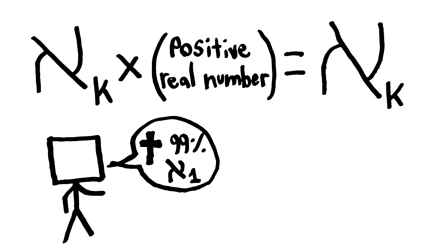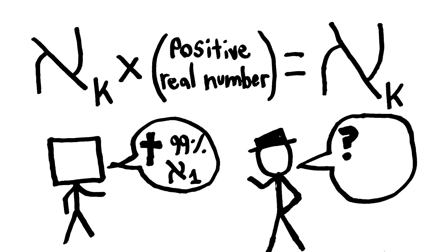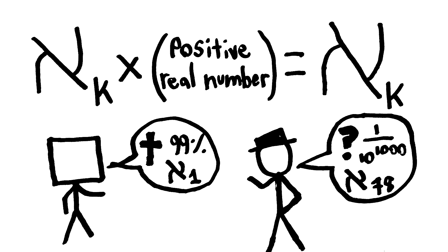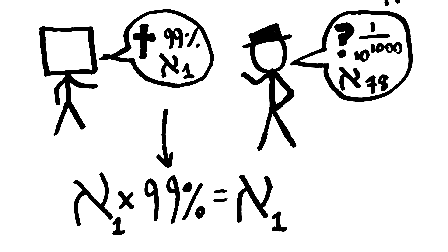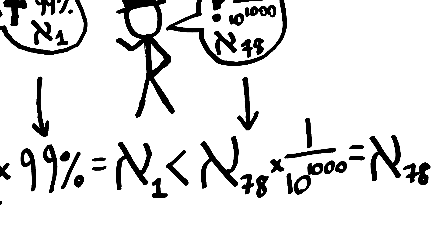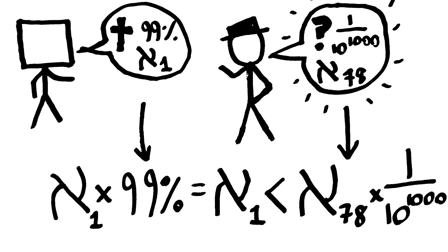Say I do some amazing apologetics and convince you that Christianity has a 99% chance of giving you, say, Aleph 1 utility. Then someone else can just come along and make up a weird religion that promises Aleph 78 utility. Because that was just made up, it's gonna have a way lower probability than Christianity, but that doesn't matter. Aleph 1 times 99% is still Aleph 1, and Aleph 78 times that small probability is still Aleph 78. So, you should prefer this random made up religion to Christianity.